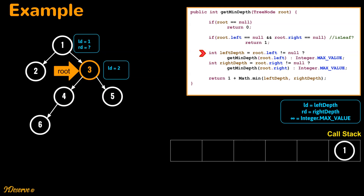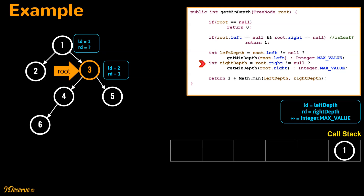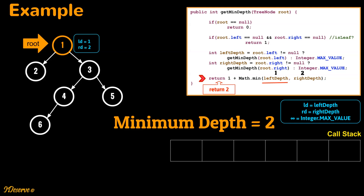We go back to the call stack where root was node 3. Left depth is 2. Since the right subtree is not null, we call get min depth recursively for the right child and store the function state. Now root is node 5 — it is a leaf, so we return 1. Back to node 3: right depth is 1, so we return 1 plus the minimum of left depth 2 and right depth 1, which is 2. Back to node 1: left depth is 1 and right depth is 2, so we return 1 plus the minimum, which is 2. The minimum depth of this binary tree is 2.